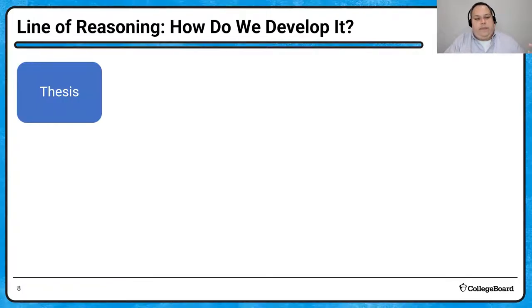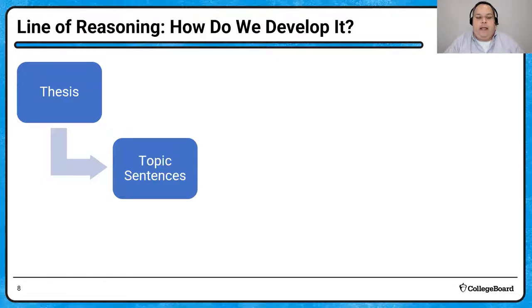Like I said earlier, we begin with the thesis. And from this thesis, and we're going to see this as an example later on, from this thesis, we determine what our topic sentences should be. Then, when we're in the middle of this body paragraph, defending the thesis, defending this topic sentence, we provide evidence and we provide commentary.